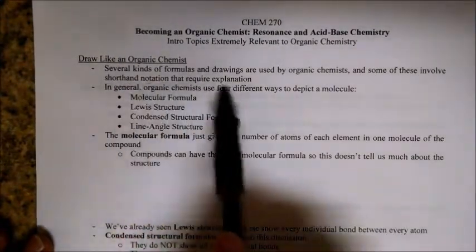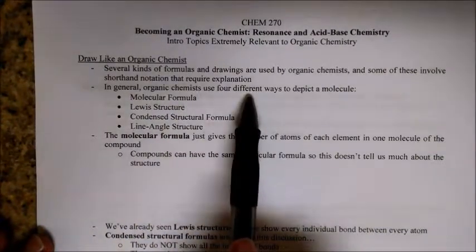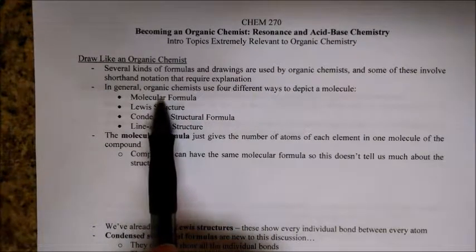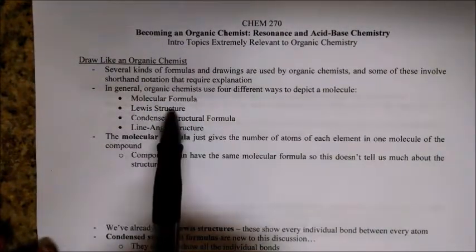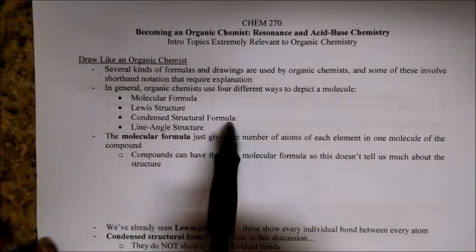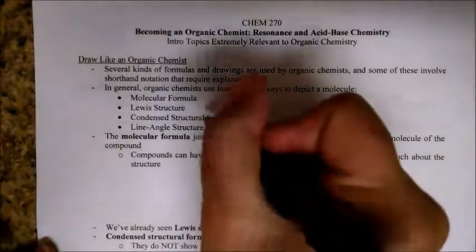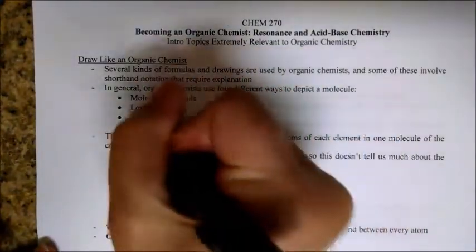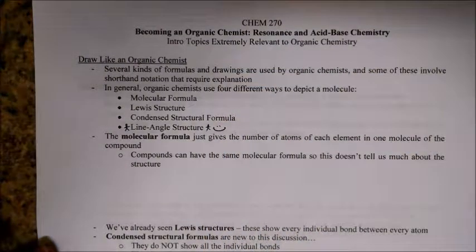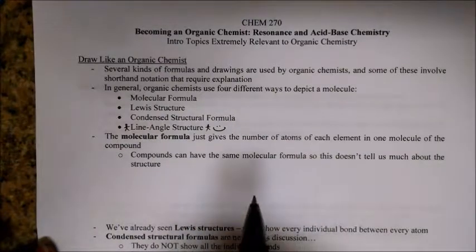With shorthand, we definitely need some detail and some explanation. In general, we have four different ways to depict a molecule: the molecular formula, Lewis structures which we should be very familiar with, condensed structural formula which you haven't seen before, and then line angle structures. This line angle structure is the mac daddy of them all — you want to get most comfortable with it, because this is what we're going to be using day in and day out.